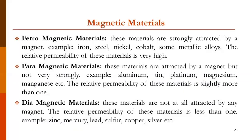Now let us highlight the magnetic materials. Certain types of magnetic materials are there. Ferromagnetic materials: these materials are strongly attracted by a magnet. Examples are iron, steel, nickel, cobalt, and some magnetic alloys. The relative permeability of these materials is very high. Ferromagnetic materials are those which are attracted strongly towards a magnet.